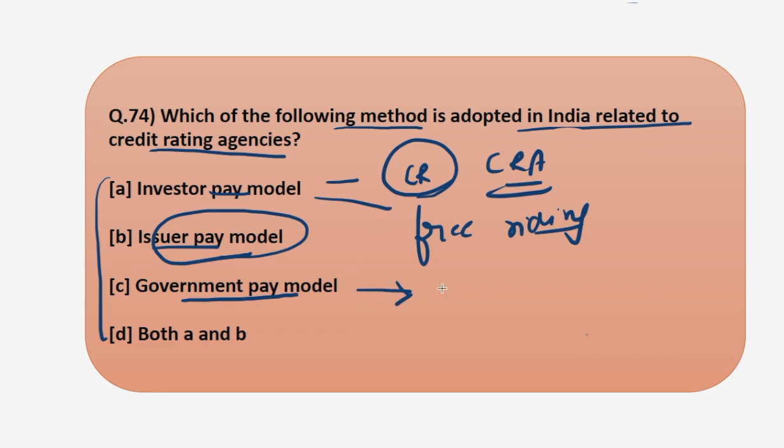The next model is government pay model, wherein the government pays for the credit ratings of companies. But here people think the government is favoring some companies. If company A has good credit rating and company B doesn't, people might think that as ratings are sponsored by the government and A has good rating, let's invest here, whereas the government has no role to play in the credit rating, it is just a sponsor. In India right now issuer pay model is followed. Although there are plans to convert to investor pay model, but right now there is issuer pay model.